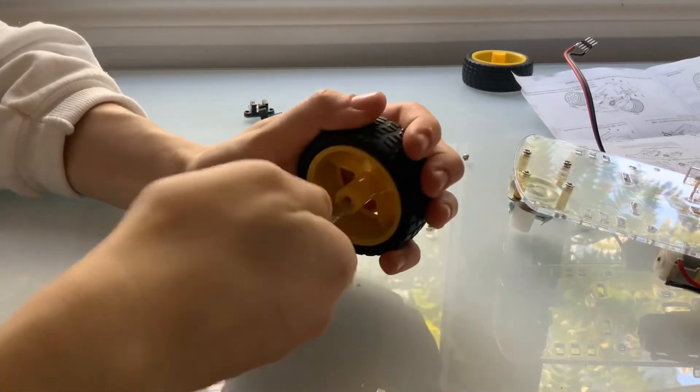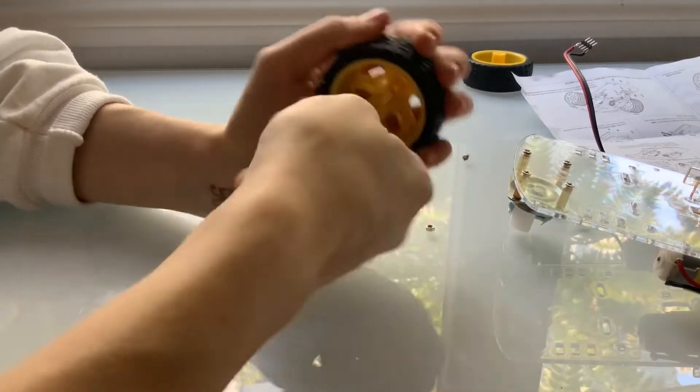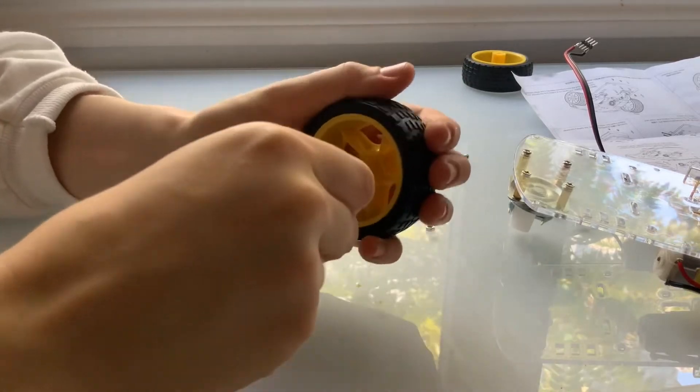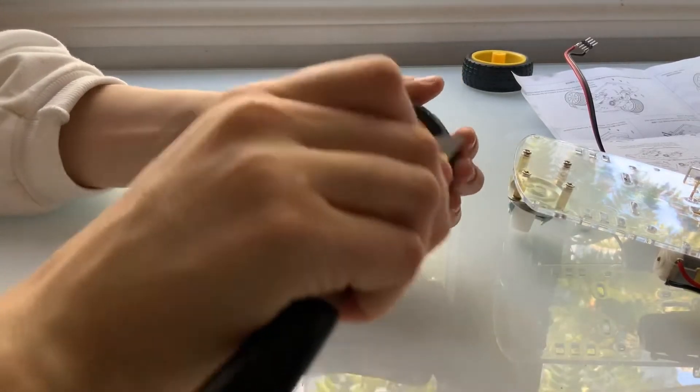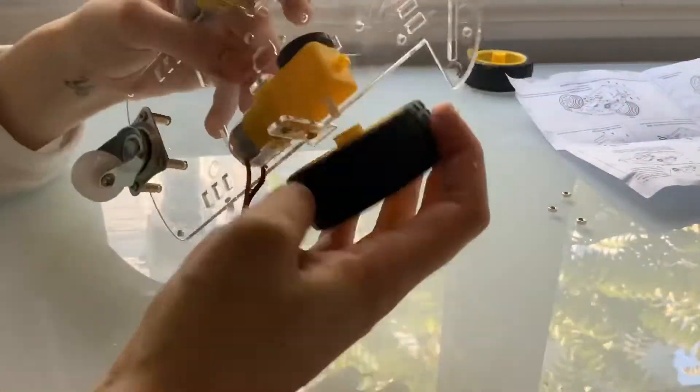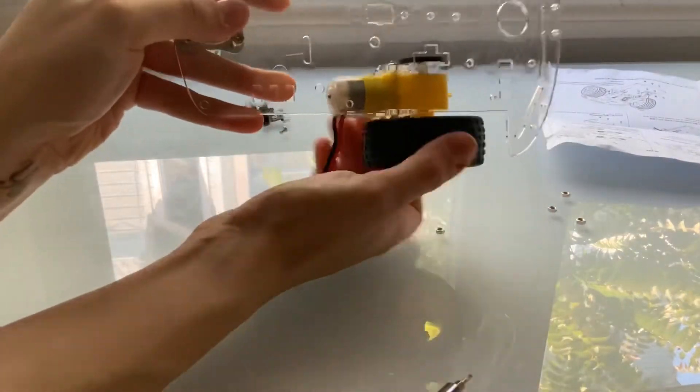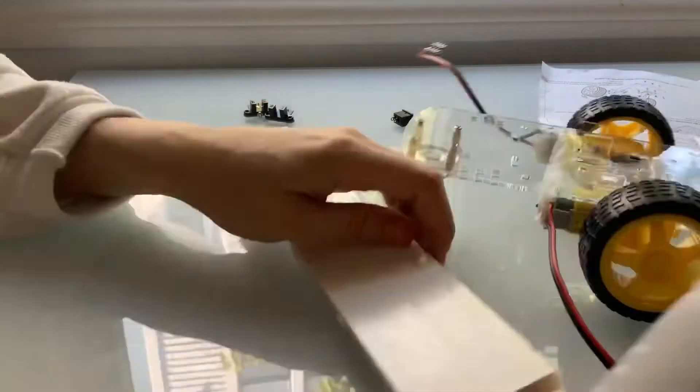If it's too hard to actually push it on, you can use a knife like this to scrape away some of the interior and make it a little easier. It's definitely better to scrape away some of the interior of the wheel than it is to break your motors, so I definitely recommend doing this.